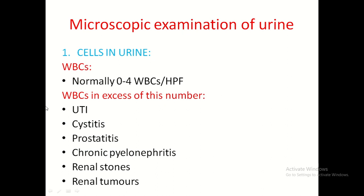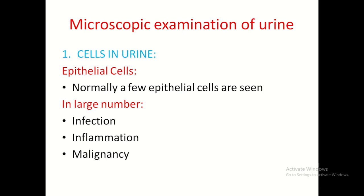Normally 0–4 WBCs per high-power field. If greater than this, causes include urinary tract infections, cystitis, prostatitis, chronic pyelonephritis, renal stones, and renal tumours — with stone and tumour cases having secondary infection causing increased leukocytes. Epithelial cells: normally a few are seen, more in female patients. If large in number, causes include various infective and inflammatory conditions or malignancy.